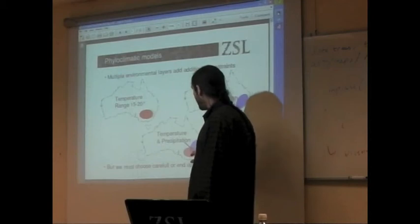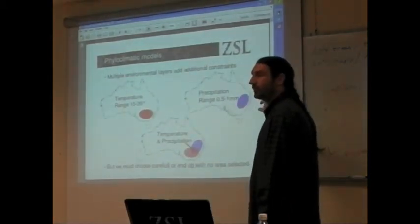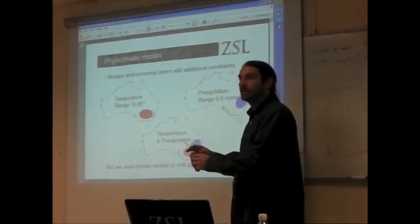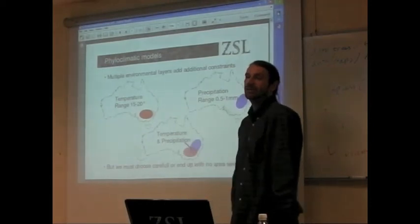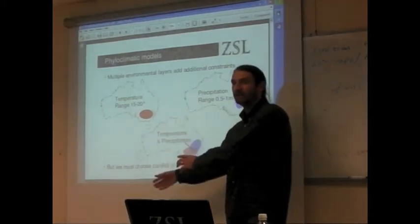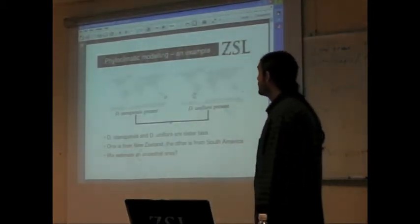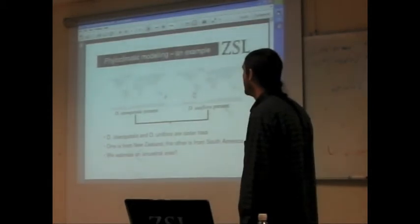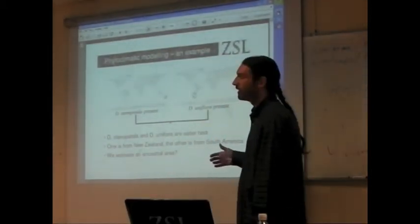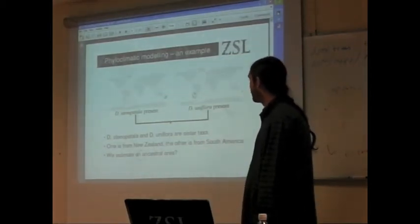As I was saying yesterday, if we choose many different environmental layers, each layer may constrain more and more and we end up with overfitting. And then when we try to project that into past climates, our overfit model ends up selecting very restricted areas. This is the example I showed the other day about what sort of biological questions we can answer or at least support hypotheses for.